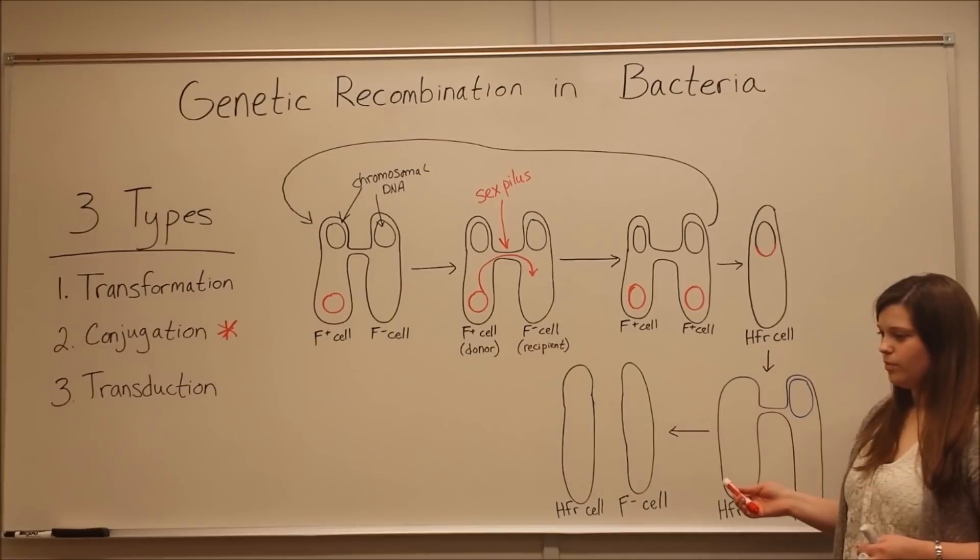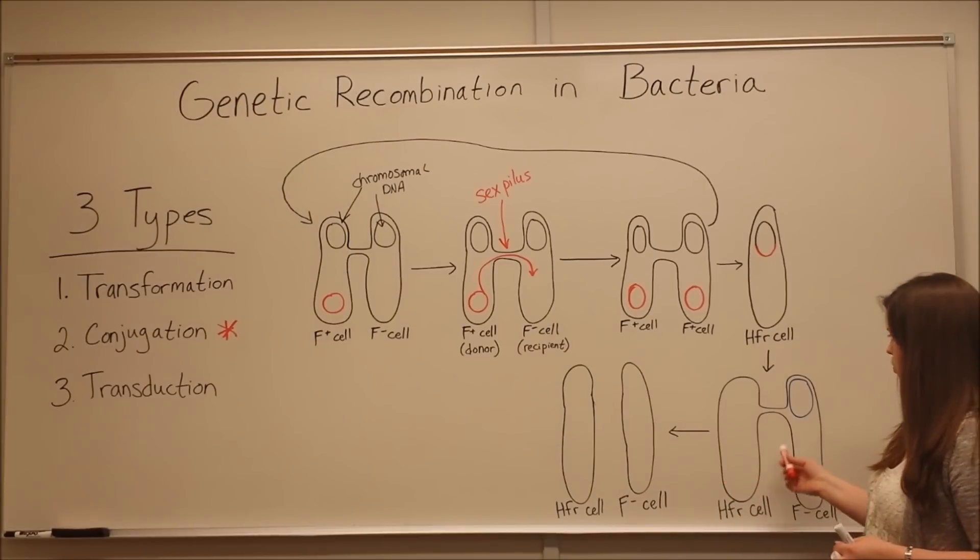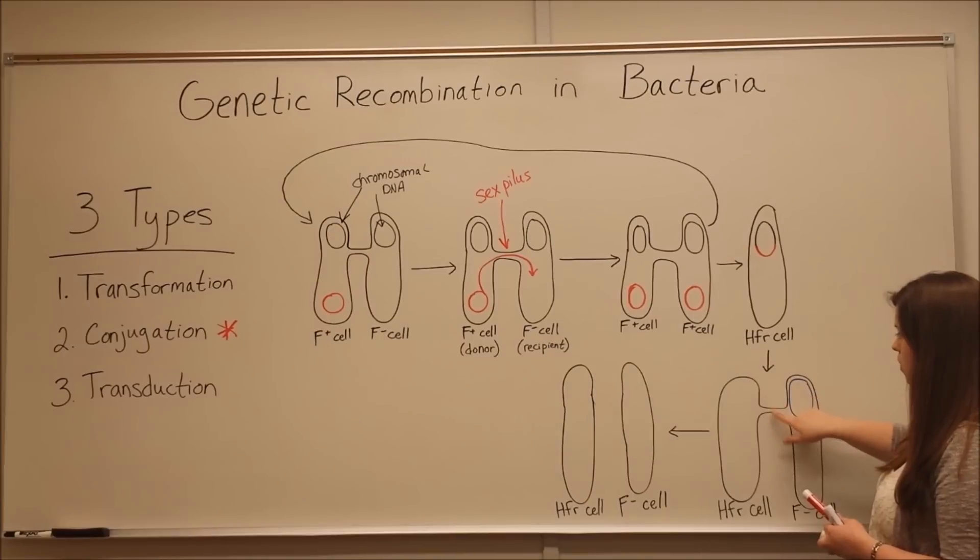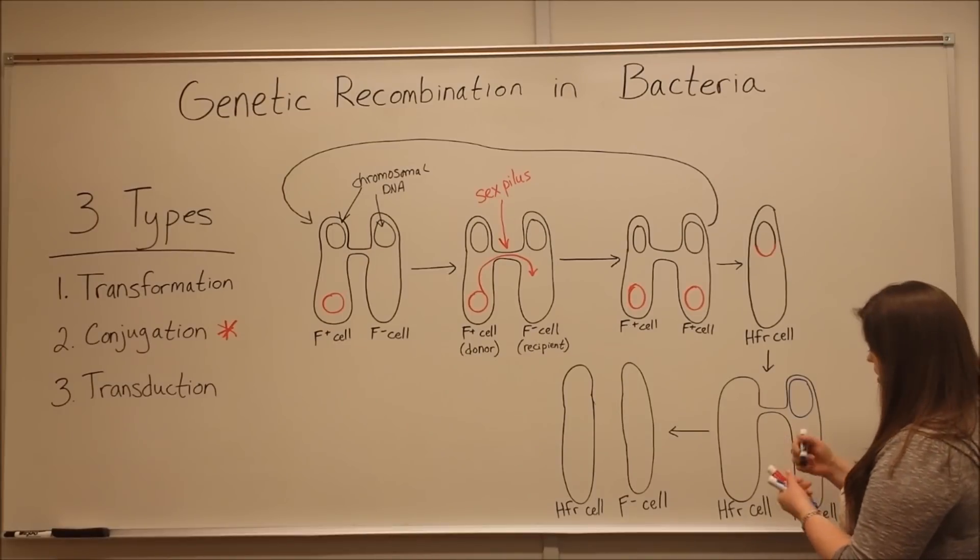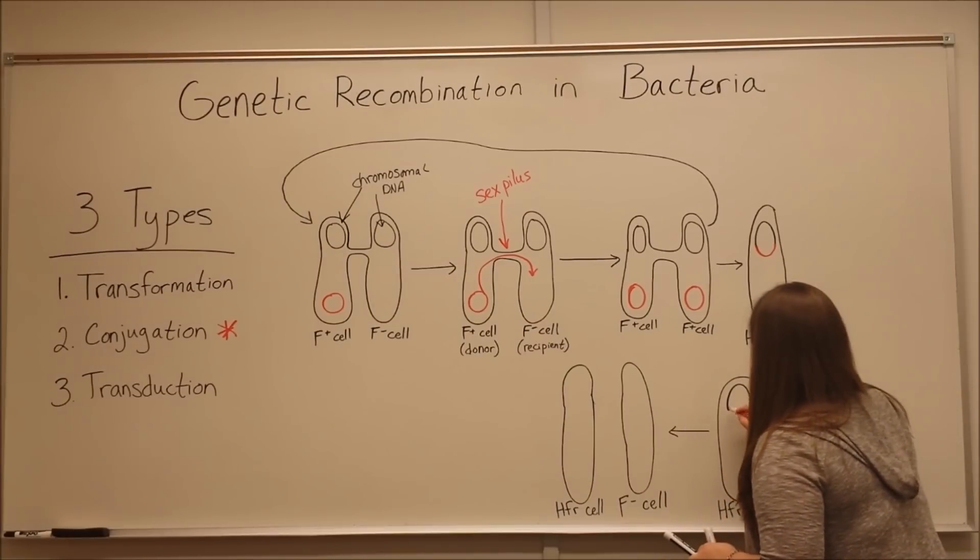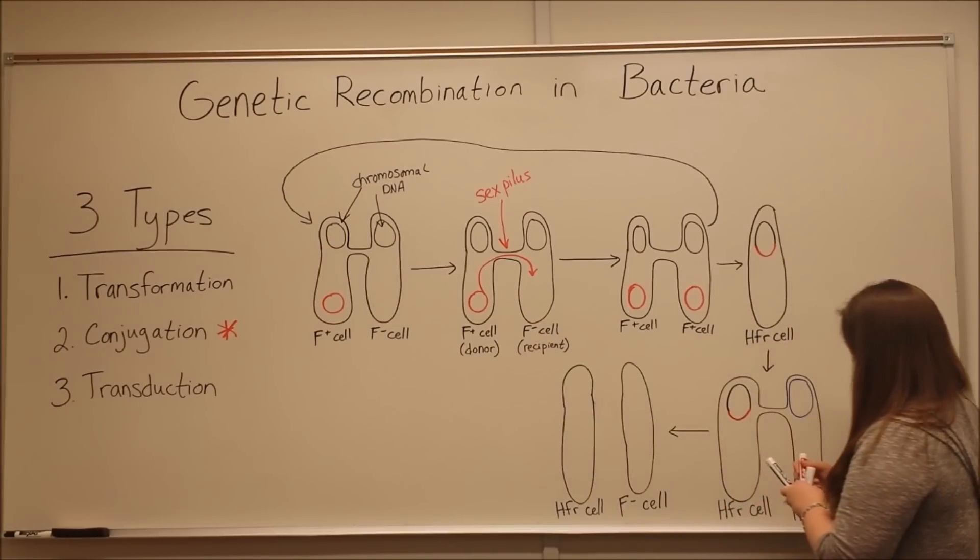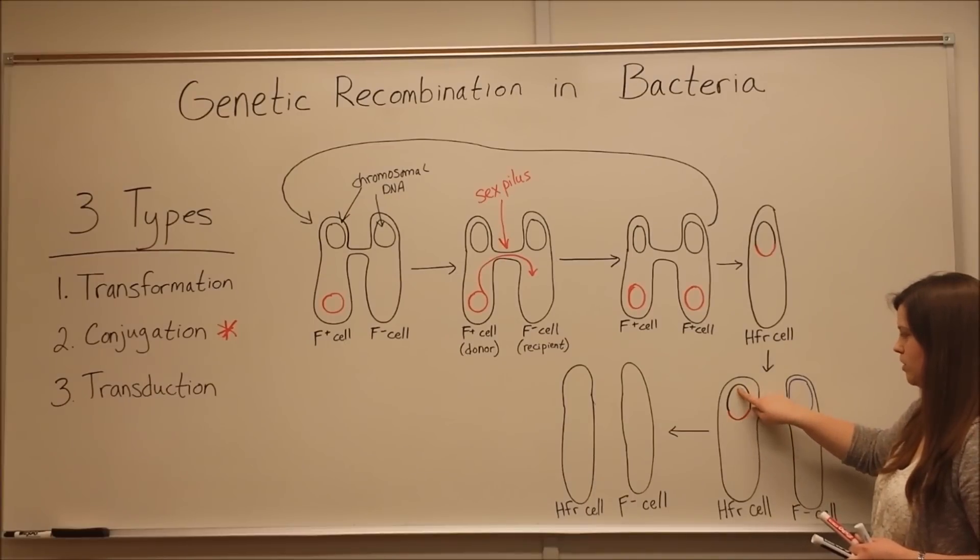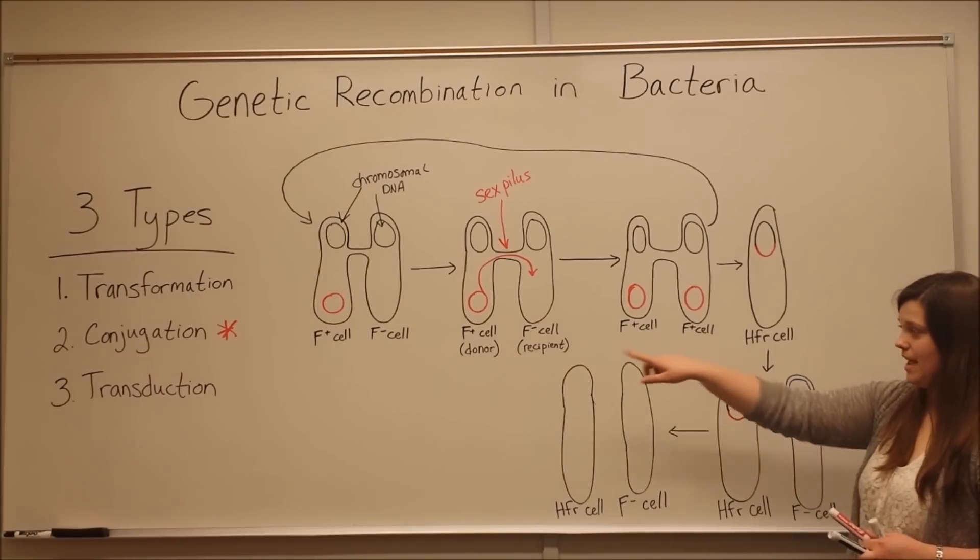These HFR cells still have DNA from the original fertility plasmid, so they can still form a sex pilus to connect to an F-minus cell. I've drawn the F-minus cell's chromosomal DNA in blue to distinguish it from the HFR cell's chromosomal DNA in black and the fertility plasmid DNA in red.